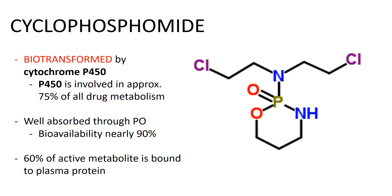The important thing to remember about cyclophosphamide is that it must be biotransformed before it is active. It must be biotransformed into an active metabolite in order for it to have the cytotoxic effects we're looking for. It is biotransformed by cytochrome P450 — not that surprising, since P450 is involved in approximately 75% of all drug metabolism — and it is well absorbed through the oral route.